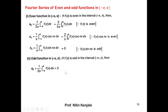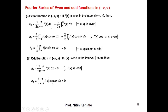Similarly, aₙ is 1 over pi times the integral of f(x) cos(nx) dx from minus pi to pi. But f(x) is an odd function and cos(nx) is an even function, so their product is an odd function. The integral of an odd function over symmetric limits is always equal to 0.